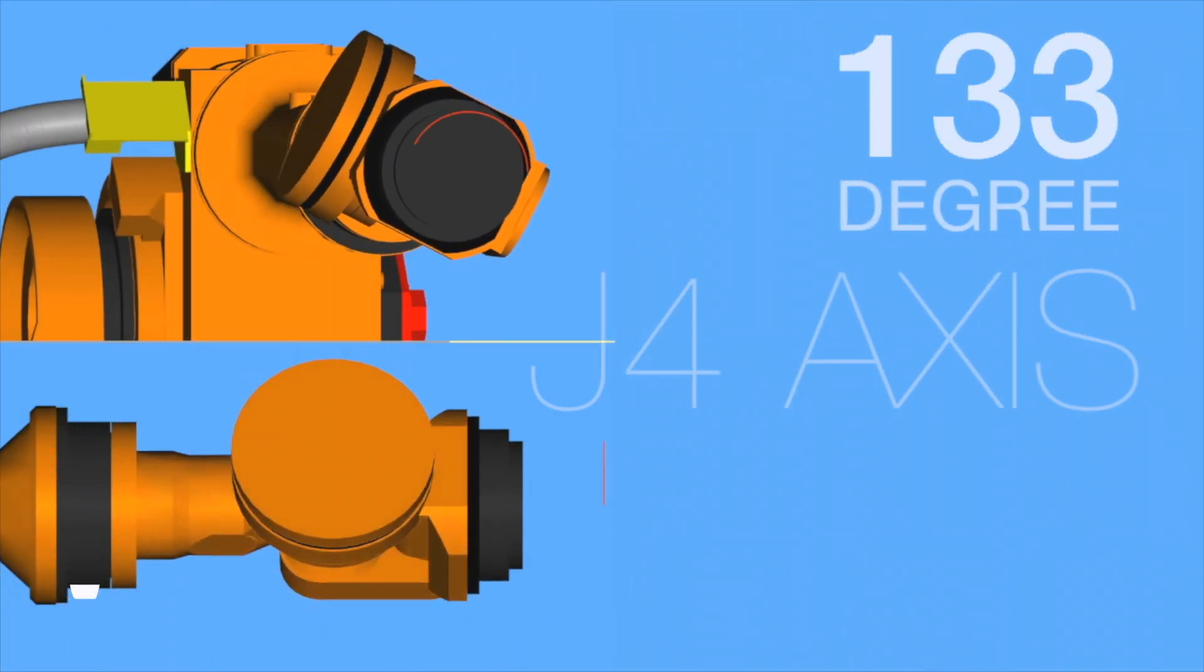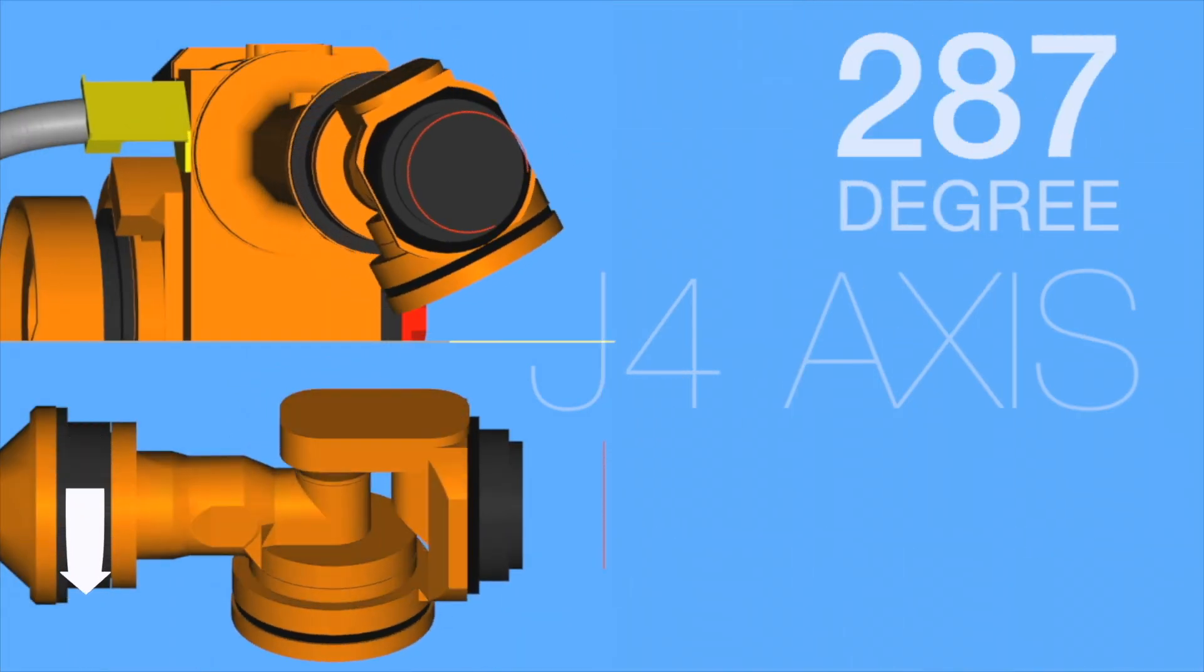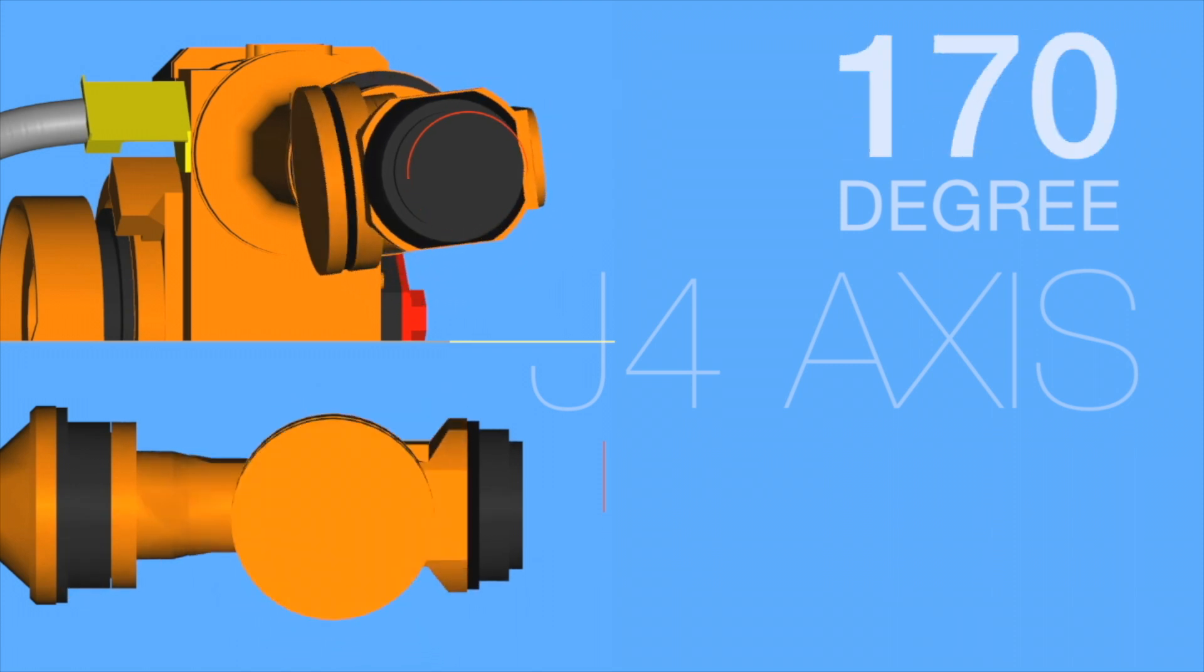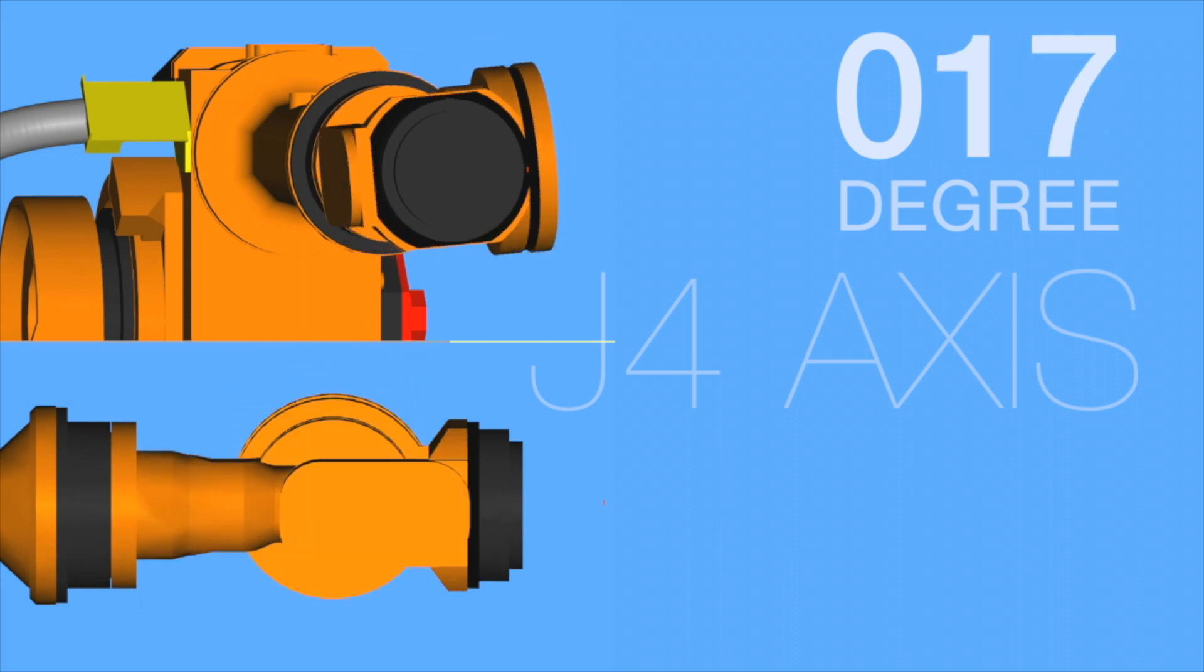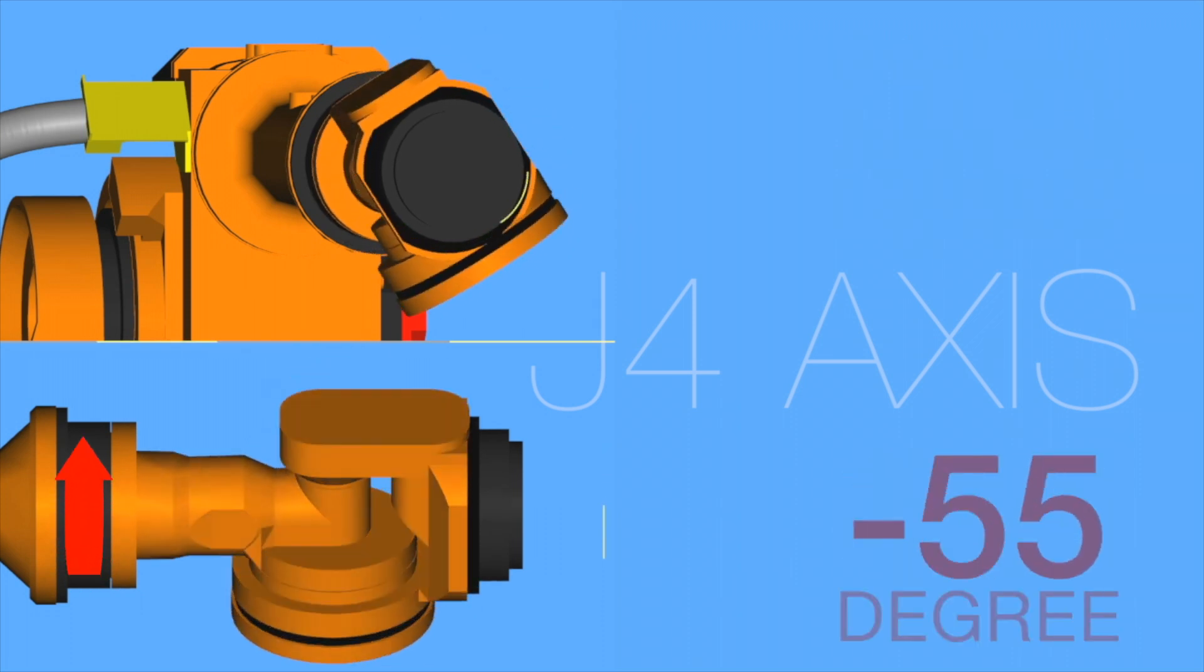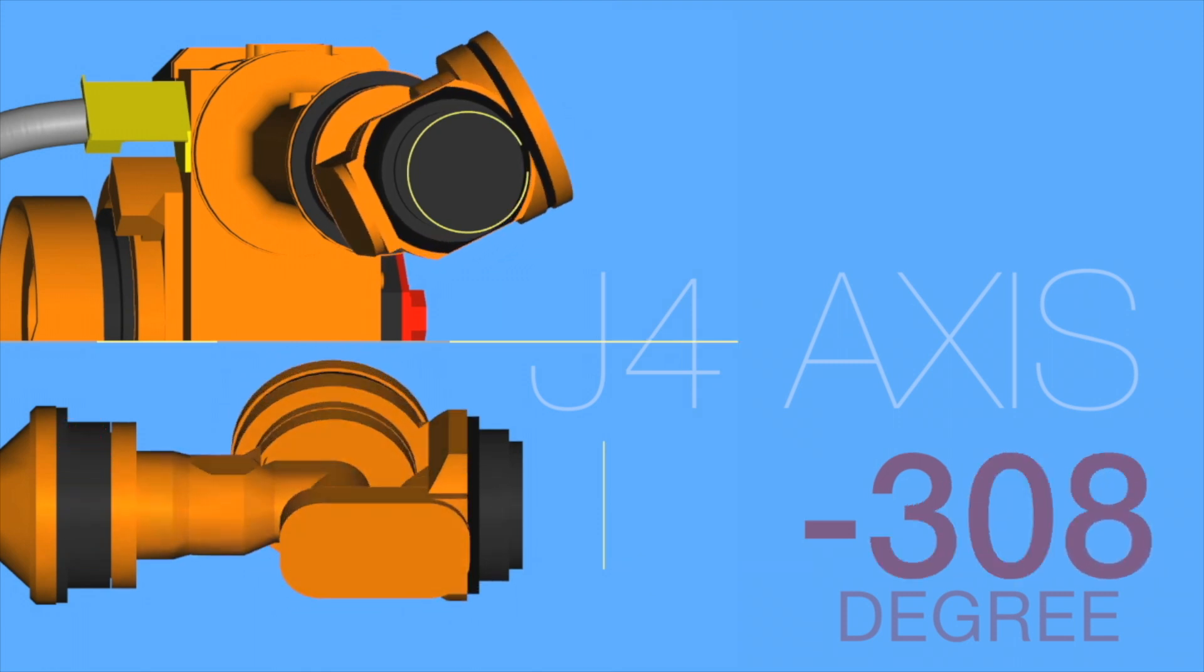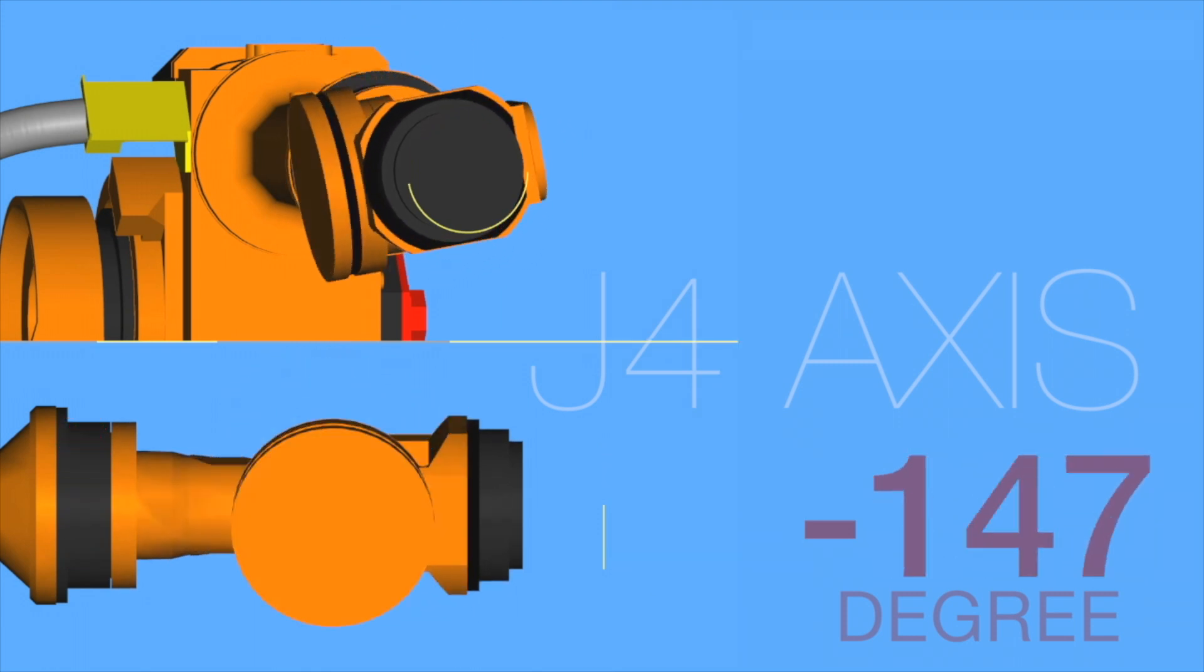Axis 4: Working in conjunction with axis 5, this axis aids in the positioning of the end effector and manipulation of the part. Known as the wrist roll, it rotates the upper arm in a circular motion moving parts between horizontal to vertical orientations. This axis is also known as the Motoman J4.